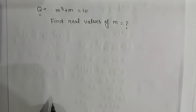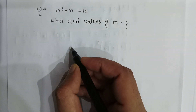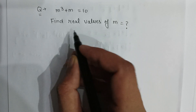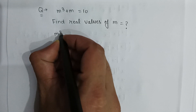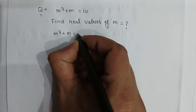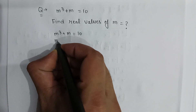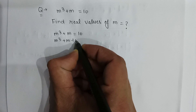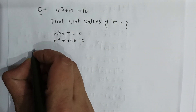This is a very nice cubic equation. m to the power 3 plus m is equal to 10. Find the value of m which will be real. So m to the power 3 plus m minus 10 is equal to 0.